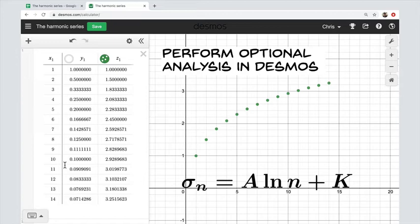We might think it's just some scaled version of ln n, A times ln n plus a constant K. So let's go with that hypothesis.